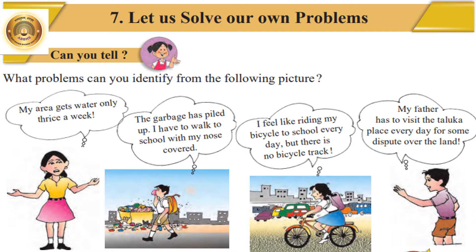Can you tell what problems you can identify from the following pictures? See the first picture — what is the girl saying? 'My area gets water only thrice a week.' Now see the next picture: the boy is passing near the garbage bin. He is saying, 'The garbage has piled up. I have to walk to school with my nose covered.' See the picture — the boy's nose is covered. Now see the next picture: the girl is saying, 'I feel like riding my bicycle to school every day, but there is no bicycle track.' Her problem is that there is no bicycle track.